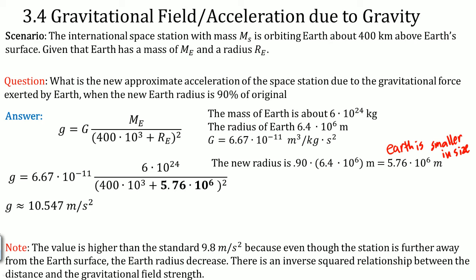There is an inverse squared relationship between the distance and the gravitational field strength. So the RE here went down. So this went down, therefore g is going to go up. And that is proved here.